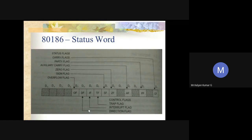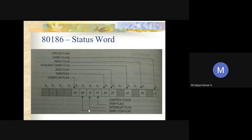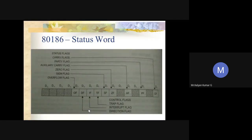The auxiliary carry flag is set whenever there is a carry or borrow at the lower-order four bits of AL after any arithmetic or logical operation; otherwise it is cleared. The zero flag is straightforward — if the result of any operation is zero, this flag is set; otherwise it is reset.